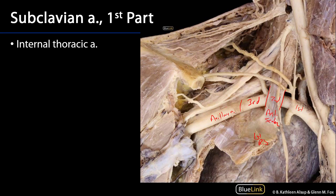The first part of the subclavian artery has three branches, one of which is germane to this session's lab, and that is the internal thoracic artery. That internal thoracic artery is going to descend the thorax sending out branches of the pericardiacophrenic artery, anterior intercostal branches one through six, and then its terminal branches will be the musculophrenic artery and the superior epigastric artery.